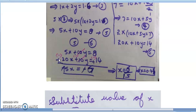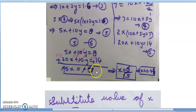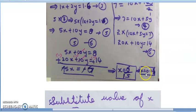Subtracting: signs change, so 5 - 20 = -15x, the 10y terms cancel, and 8 - 14 = -6. The negatives cancel, giving x = 6/15 = 0.4.